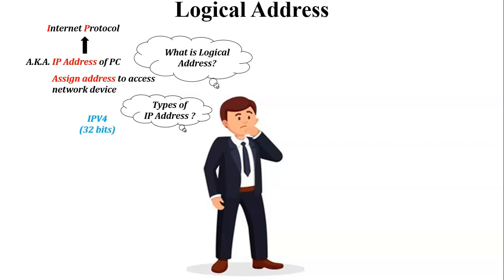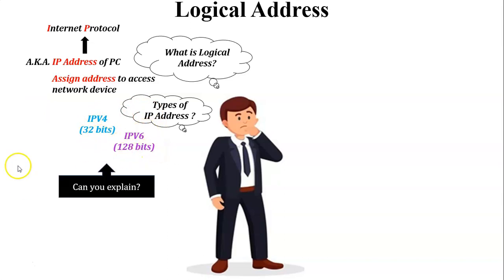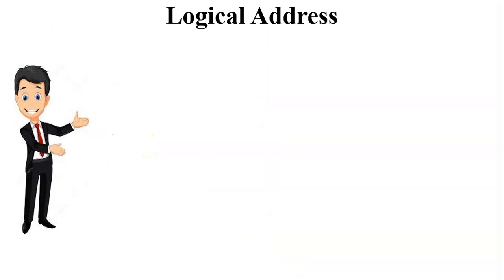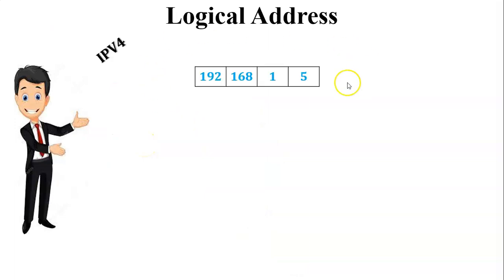There are two types of IP address: one is IPv4 and the second is IPv6. IPv4 is a 32-bit address and IPv6 is a 128-bit address. Let us see examples of IPv4 and IPv6. The example of IPv4 is the decimal value 192.168.1.5.